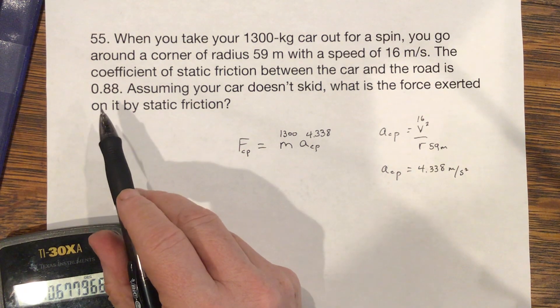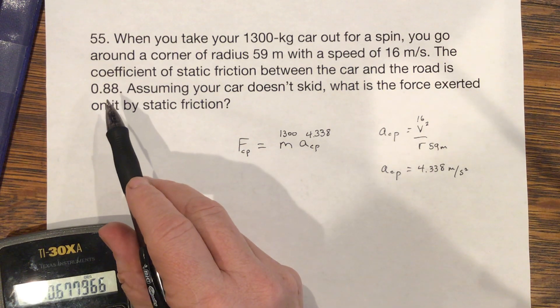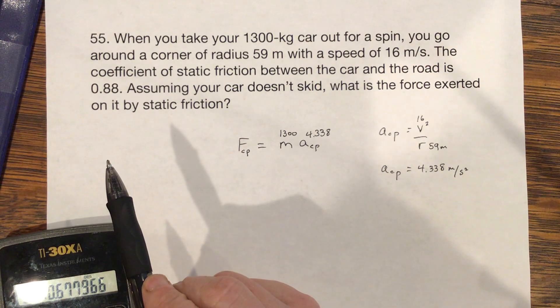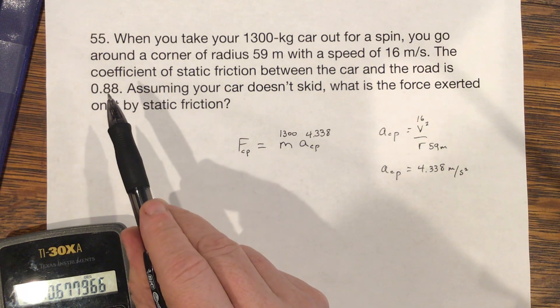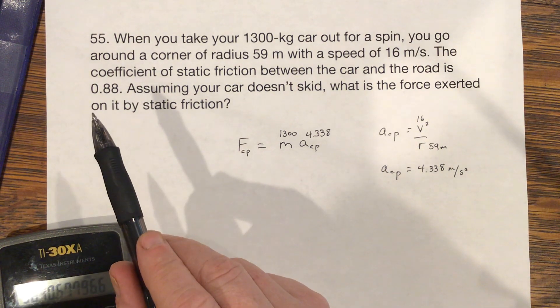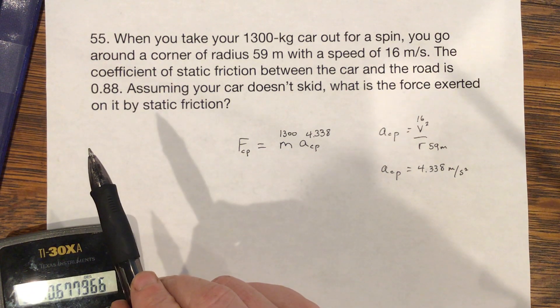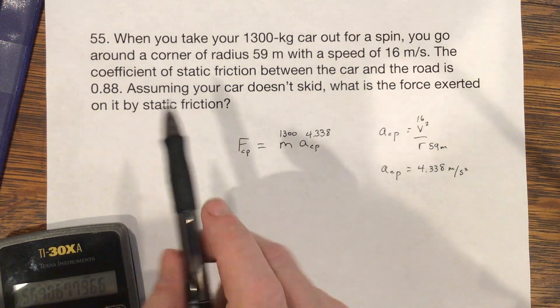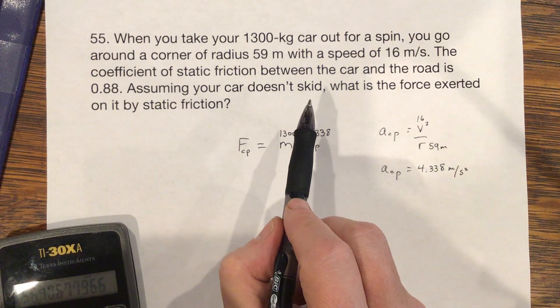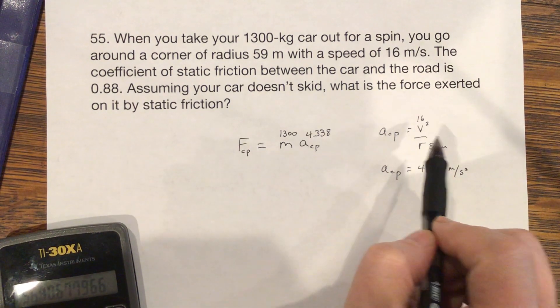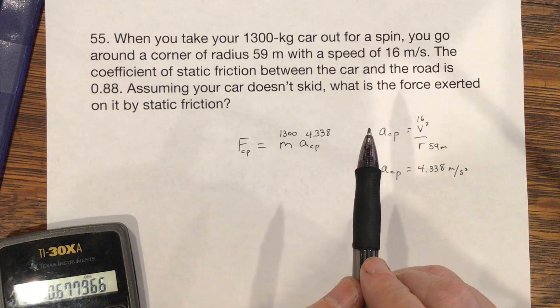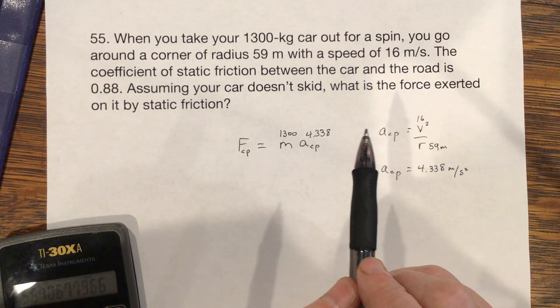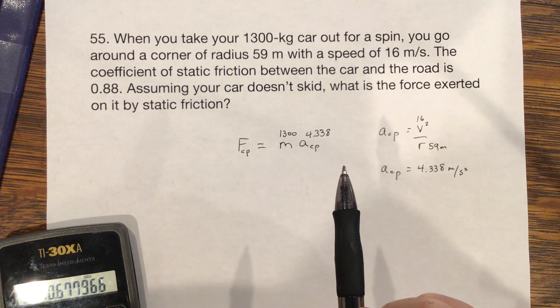What you're using instead is the friction on the tires. And I guess this is a herring. It's interesting, they don't give a lot of these in this book, but this 0.88 is not necessary. You would need this if you wanted to know what is the quickest speed you could go around that curve. This just says assuming your car doesn't skid, which means that the 16 meters per second is within that speed range that keeps you on the road.